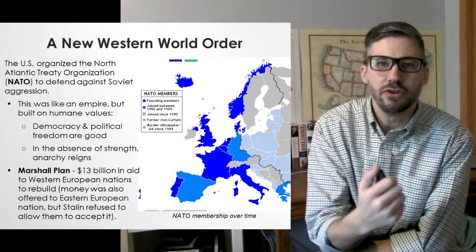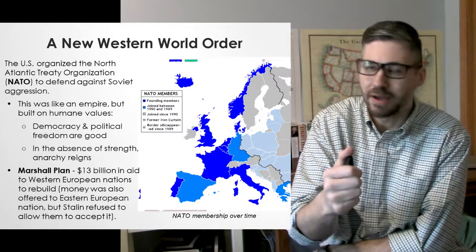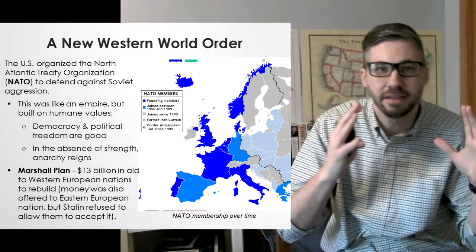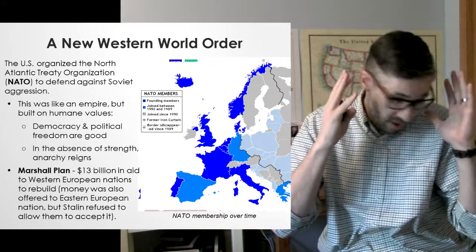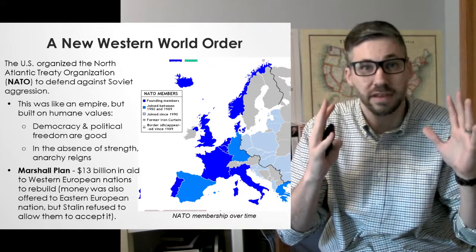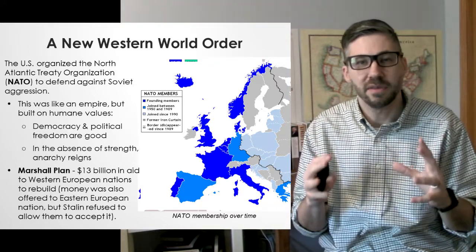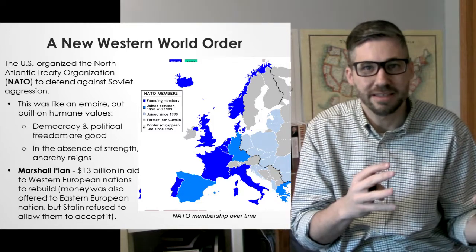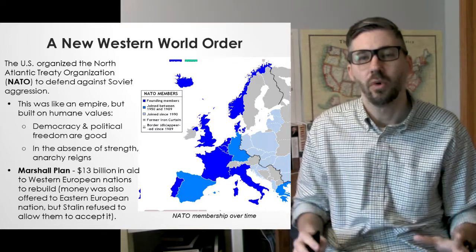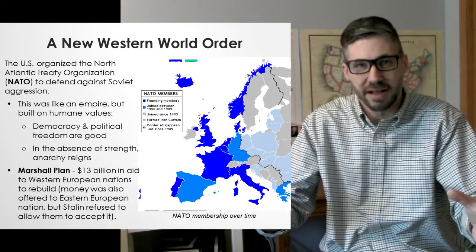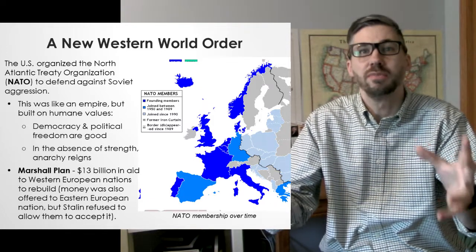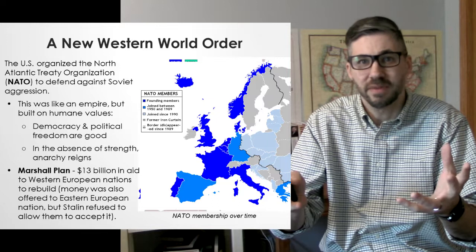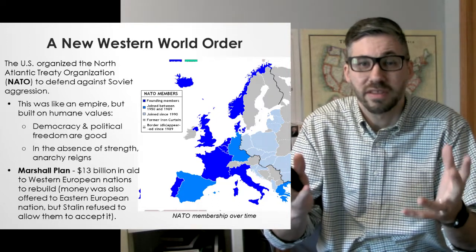This is essentially an American-run Western empire, but it's built on humane values — not resource extraction. It's built on the idea that democracy and political liberties are good, universally good, and people are entitled to them. Where people are not allowed to have those liberties and freedoms, that is bad. We should stop the expansion of systems that take away people's freedoms. The way you do that is through strength. We learned in World War II you can't avoid it by putting your head in the sand. In the absence of strength, anarchy reigns. That was the lesson of the 1930s, and now we want a robust response.